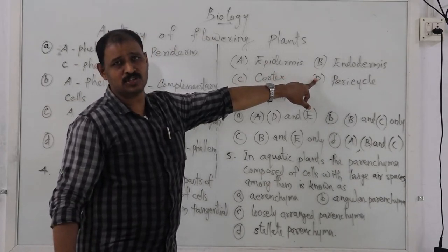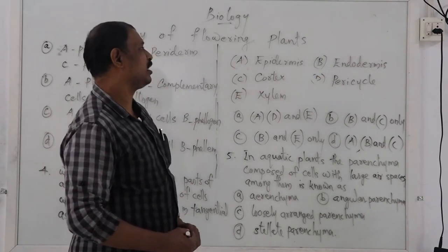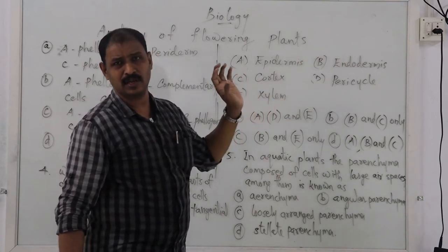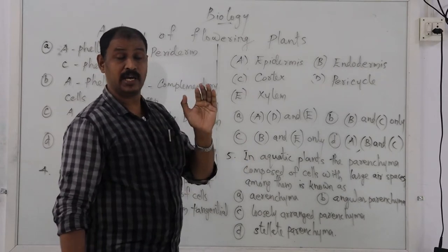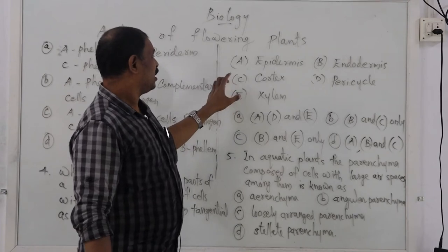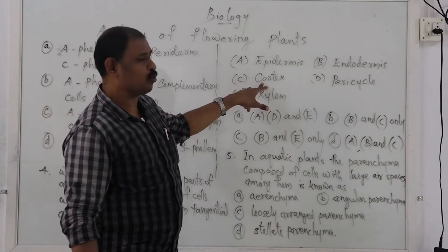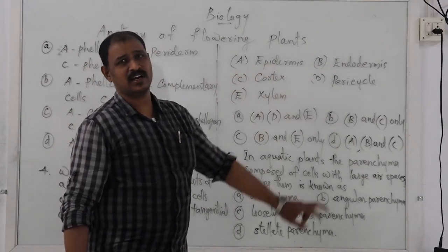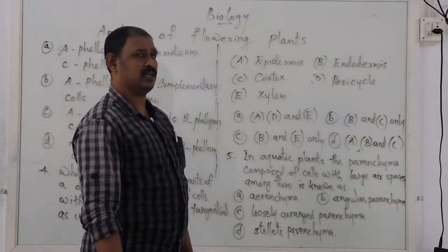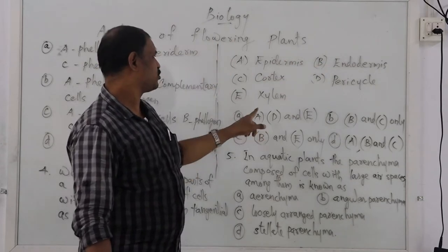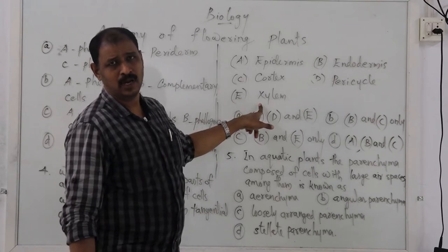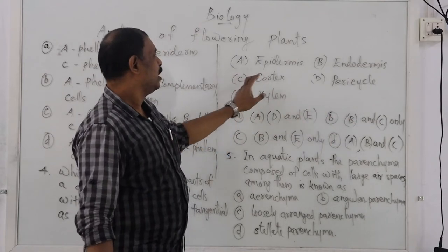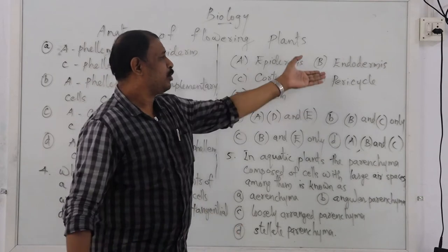The endodermis has suberin deposition for waterproofing and preventing leakage. The epidermis is not suberin — the cuticle is its protective layer. The pericycle is a cross-section layer, and the endodermis has suberin deposition. Lignin is also a deposition but suberin is specific to endodermis. The correct option is B and C — the endodermis has suberin deposition.